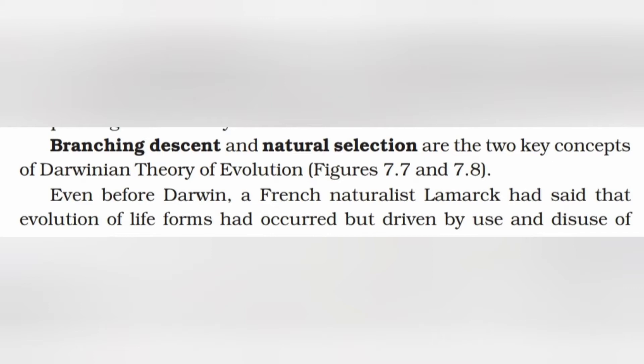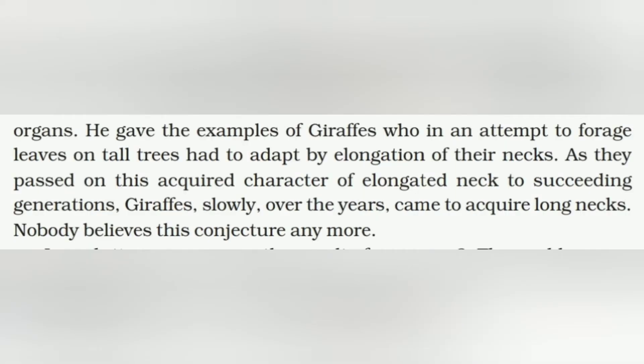Even before Darwin, a French naturalist, Lamarck, had said that evolution of life forms had occurred, but driven by use and disuse of particular organs. He gave the example of the giraffe, which in an attempt to forage leaves on tall trees had to adapt by elongation of its neck. As they passed on this acquired character of an elongated neck to succeeding generations, the giraffe slowly over the years came to acquire a long neck. Nobody believes this conjecture anymore.